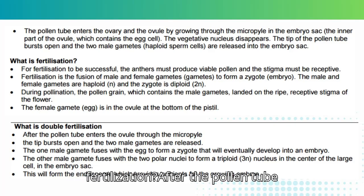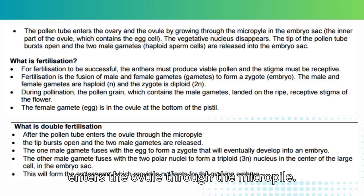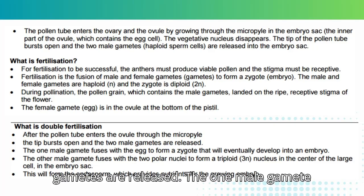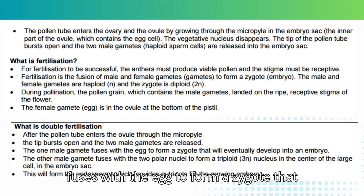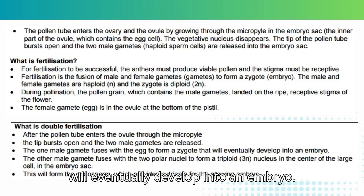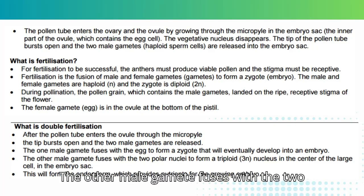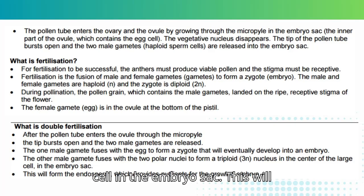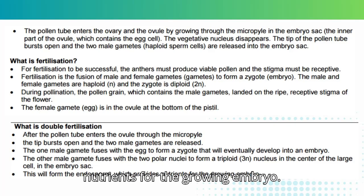What is double fertilization? After the pollen tube enters the ovule through the micropyle, the tip bursts open and the two male gametes are released. One male gamete fuses with the egg to form a zygote that will eventually develop into an embryo. The other male gamete fuses with the two polar nuclei to form a triploid (3N) nucleus in the center of the large cell in the embryo sac. This will form the endosperm, which provides nutrients for the growing embryo.